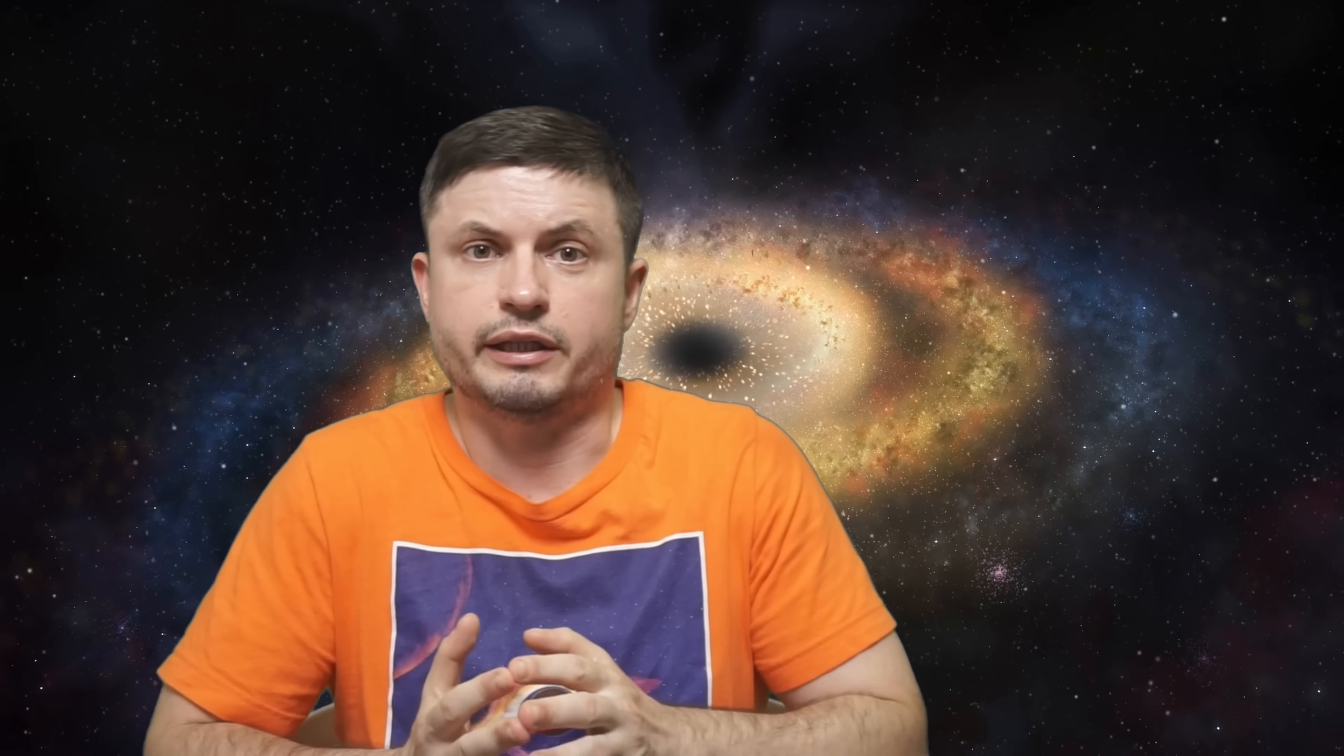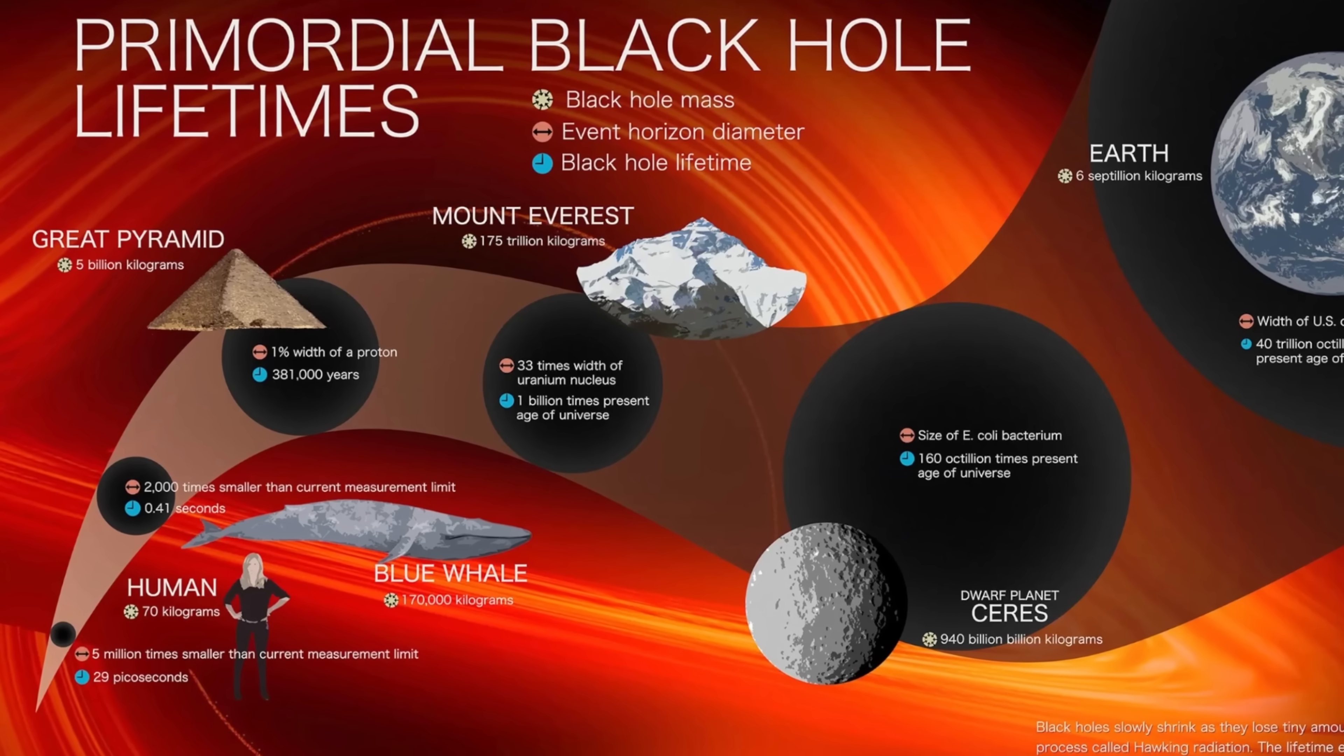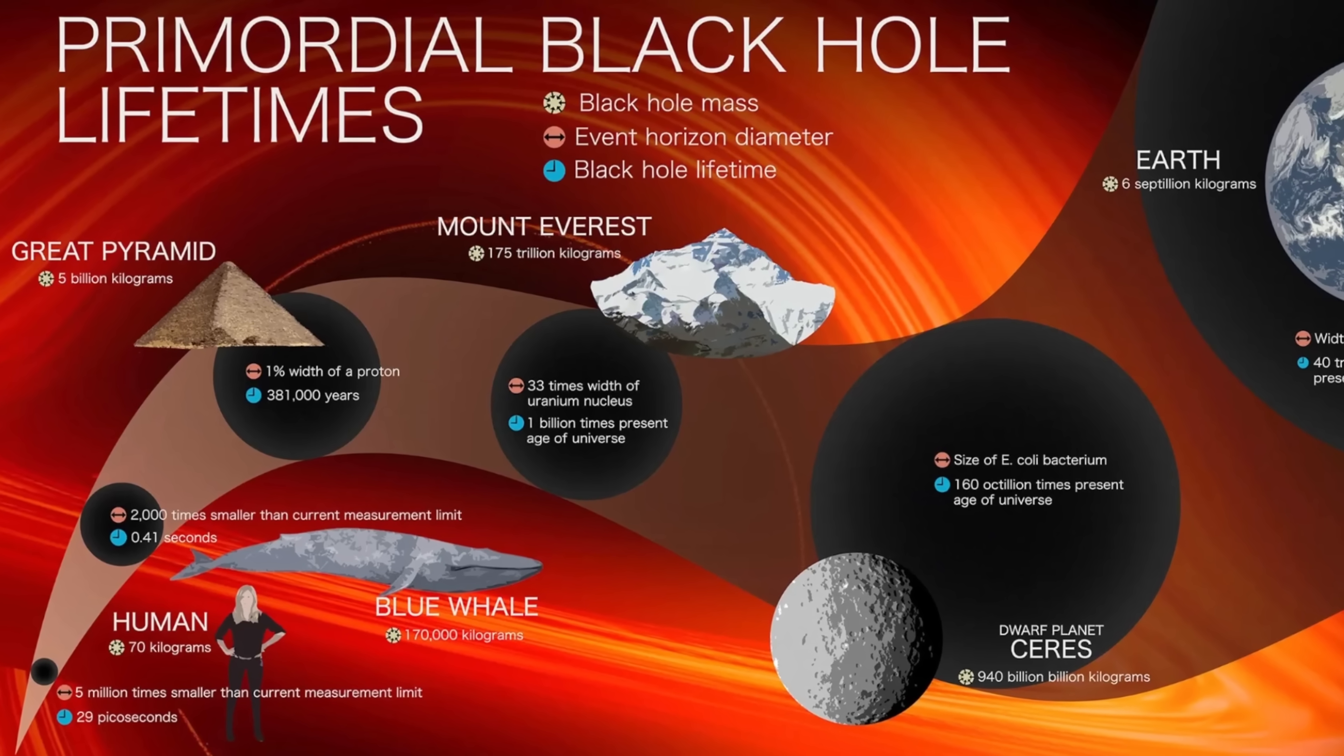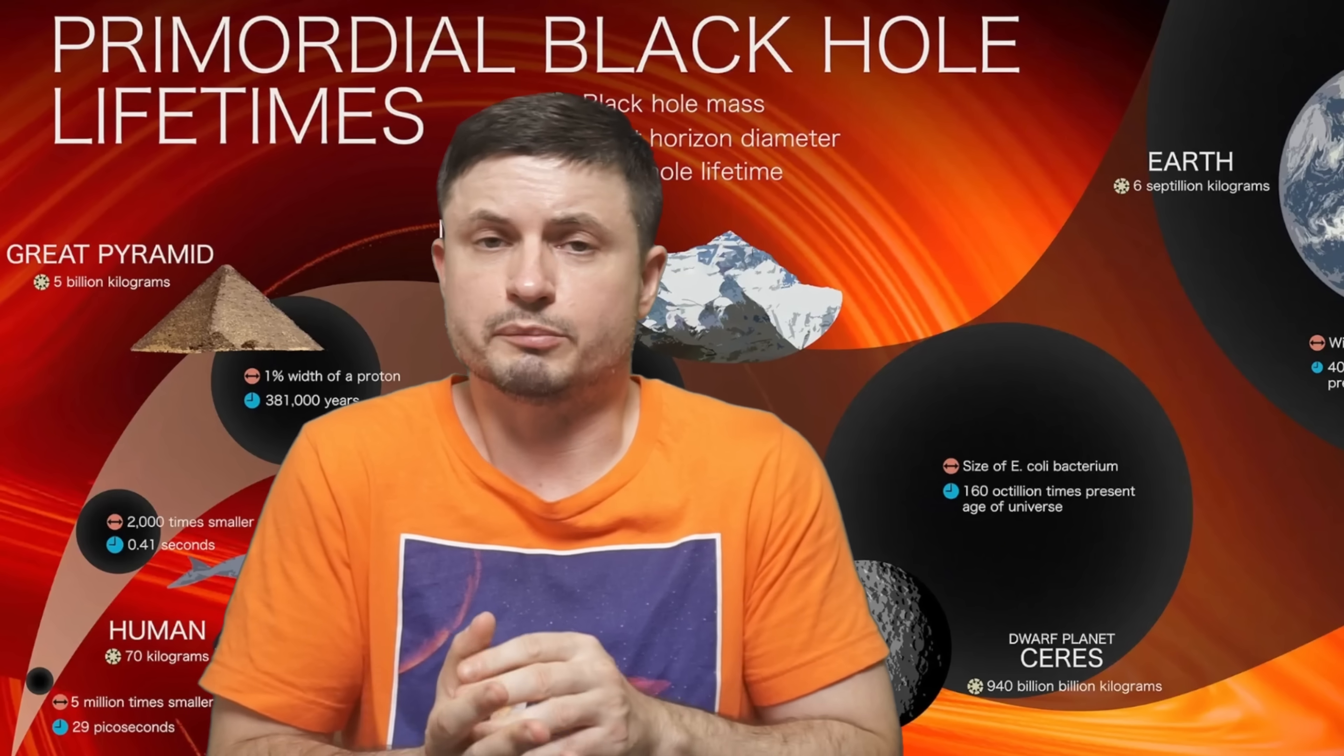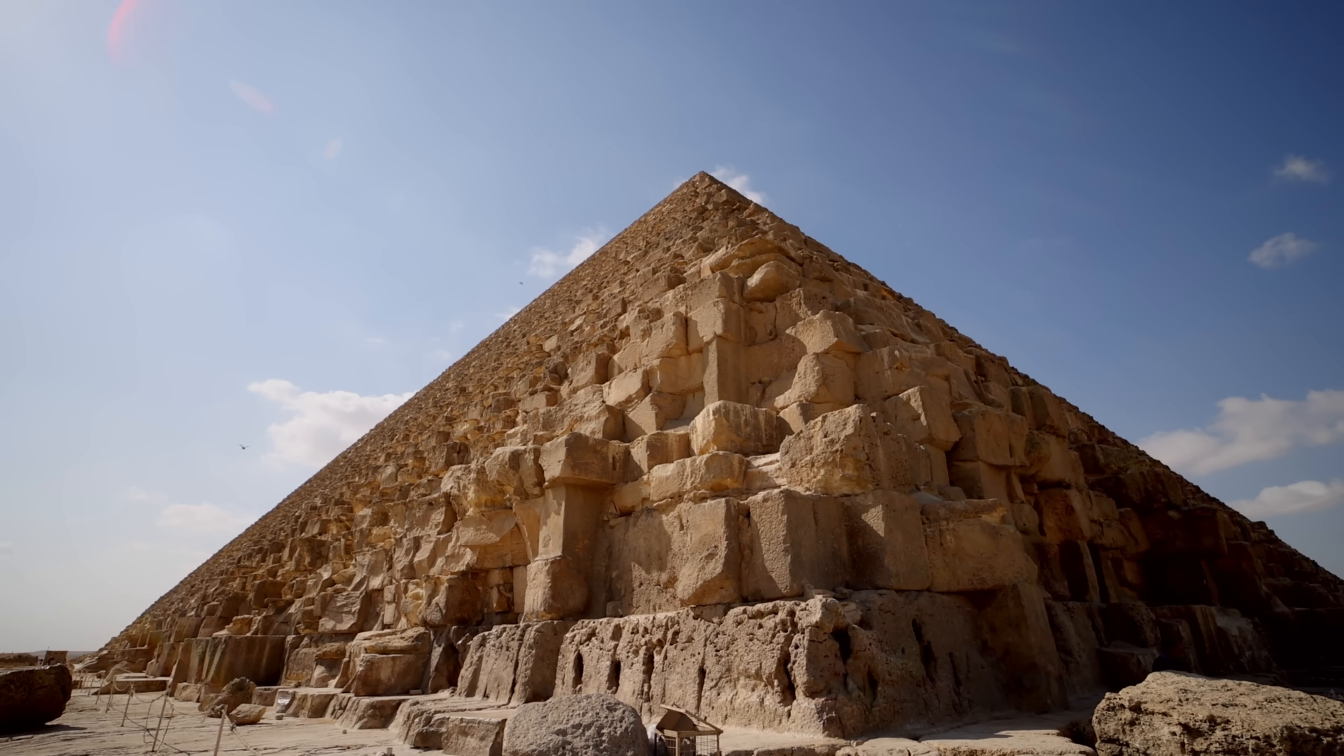Or basically just lose their mass over time until there's just nothing left. And NASA's website even has this infographic you see right here that essentially shows us how long it would take for a typical black hole to evaporate depending on its mass. For example, a black hole with the mass of the Great Pyramid of Giza would take approximately 380,000 years to evaporate, whereas a blue whale mass black hole would only take approximately 0.41 seconds.